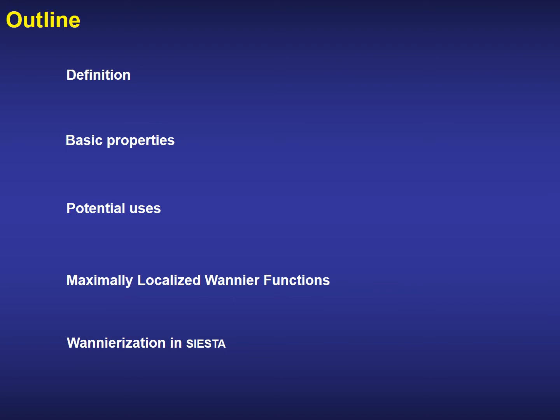This is the outline of the talk. I shall split it into five different sections. First of all, I shall define what a Wannier function is. Then I shall describe their most important properties. Later, some of their potential uses will be highlighted. Emphasis will be made on the fact that the Wannier functions are not unique, and I will describe one procedure to produce maximally localized Wannier functions. Finally, I shall deliver a brief introduction about how this is done in SIESTA, giving some hints about the kind of exercises you will work with in the practical sessions.